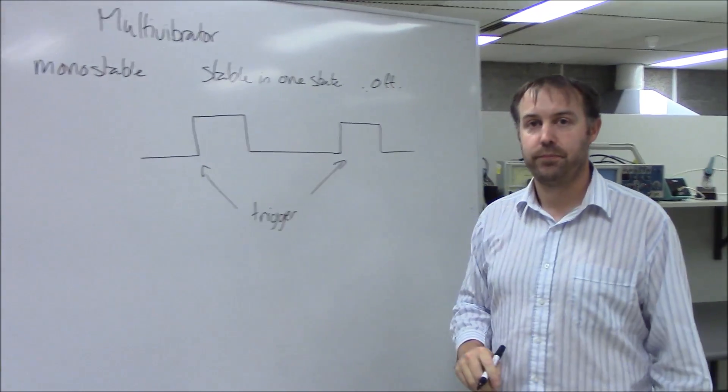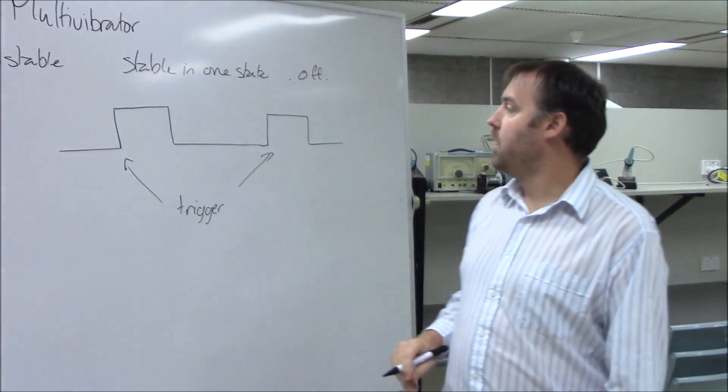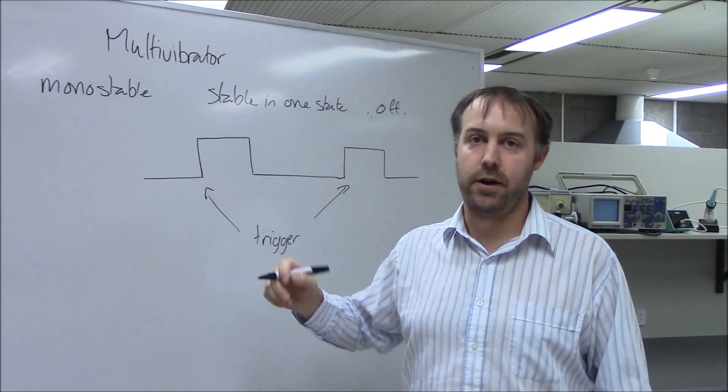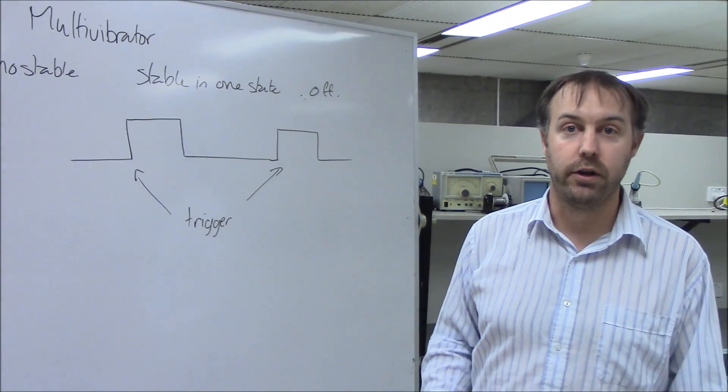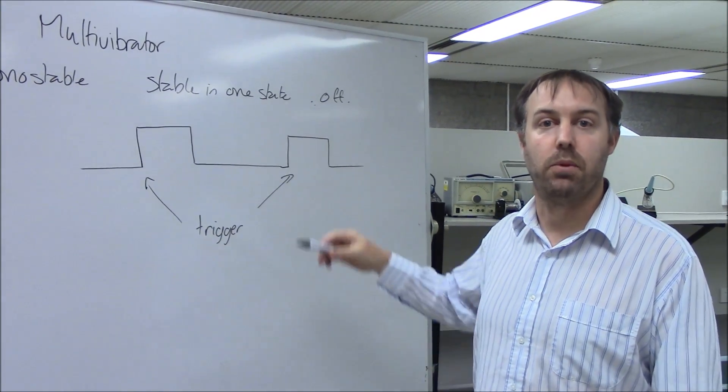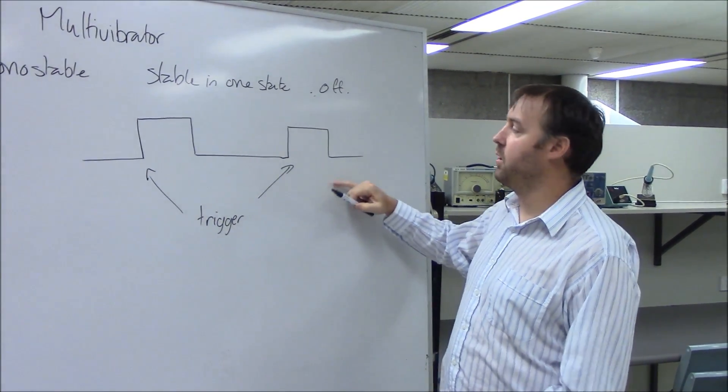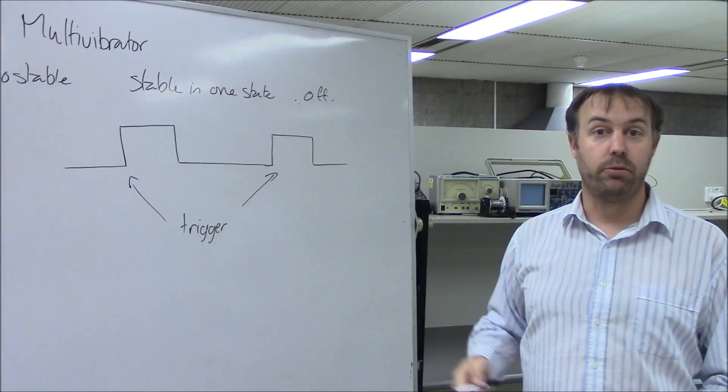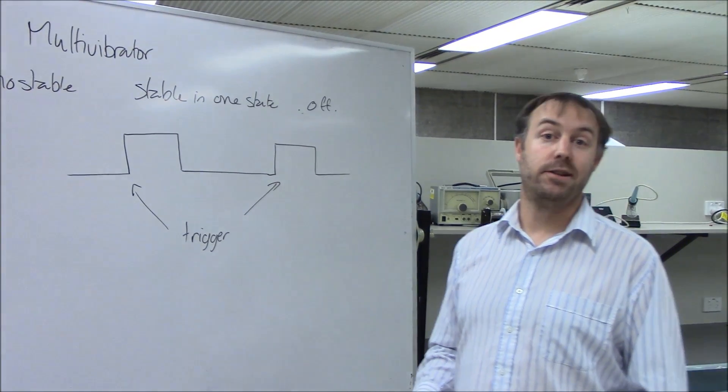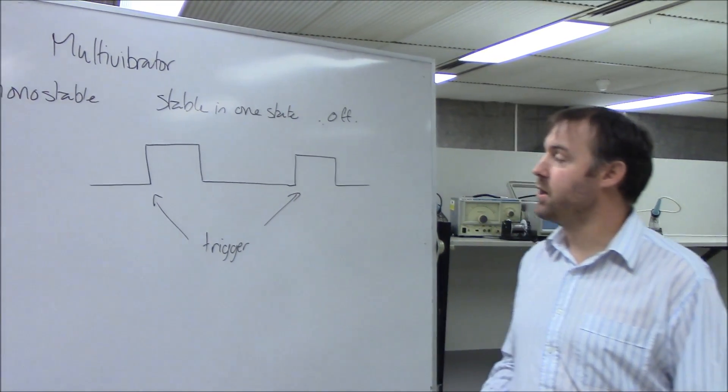Does it need to be triggered to be off? Well you can look at the complement of it if you want, so it's on and then if you trigger it goes off for a little while then it goes back on again. It's the same thing, just the complement. We'll consider off being the stable state and on being the temporary unstable state for the monostable.